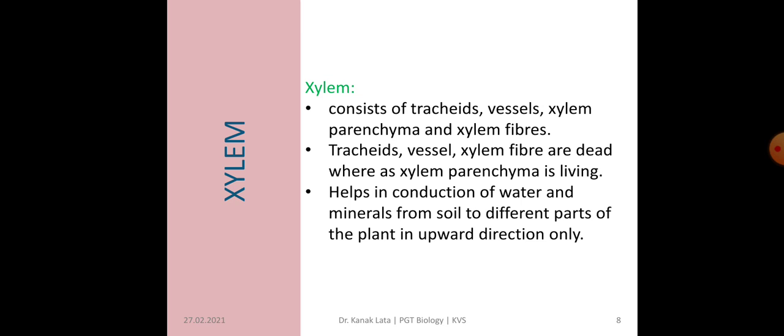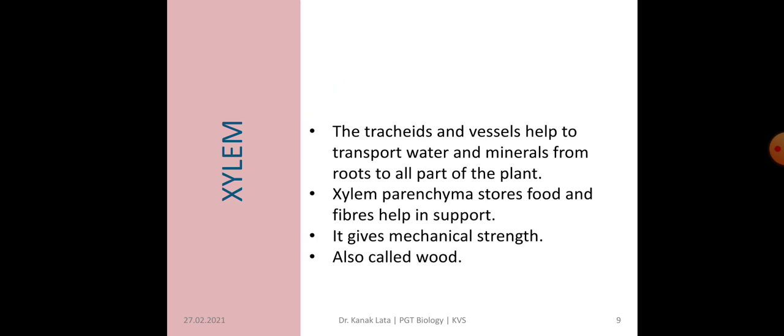First, it is about xylem. Xylem consists of tracheids, vessels, xylem parenchyma, and xylem fibres. Out of these four elements, tracheids, vessels, and xylem fibres are dead, whereas xylem parenchyma is living — so three are dead and one is living. Xylem helps in conduction of water and minerals from soil to different parts of the body in the upward direction only. Tracheids and vessels help in transport of water and minerals from the roots to all parts of the body, while xylem parenchyma stores food and xylem fibre gives mechanical support to the plant. Xylem is also called wood.